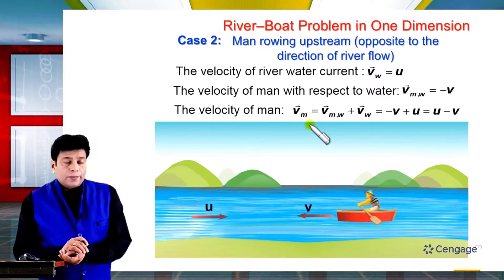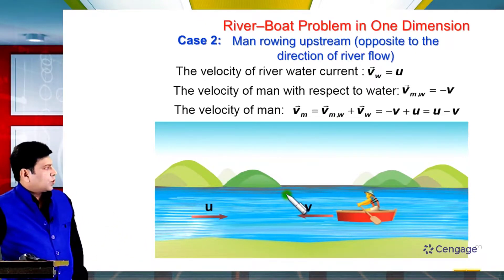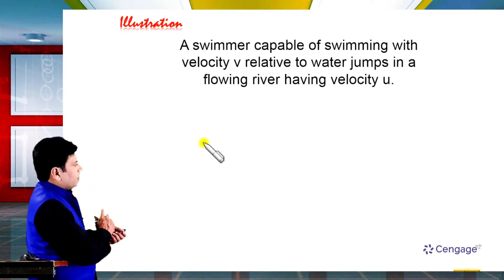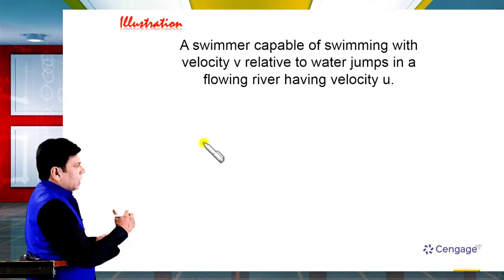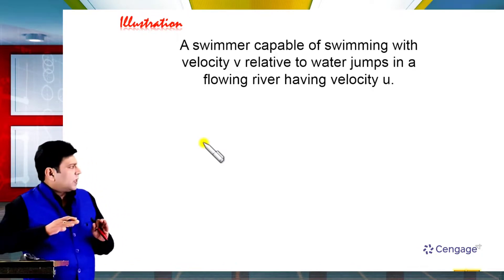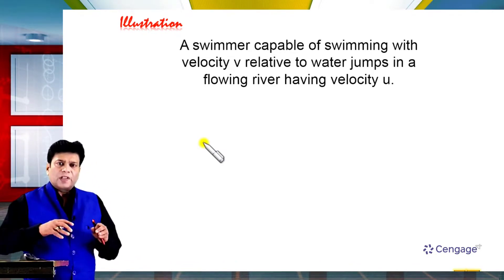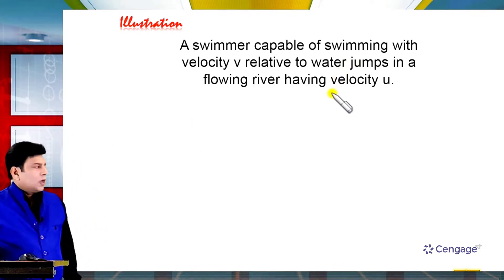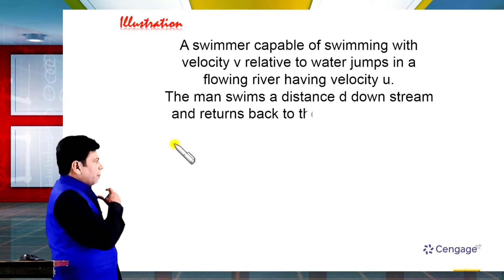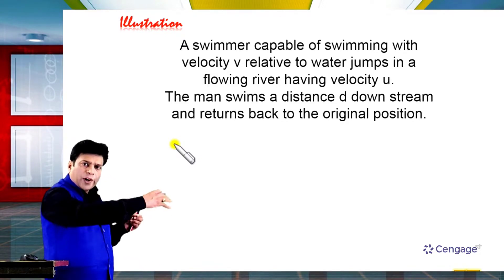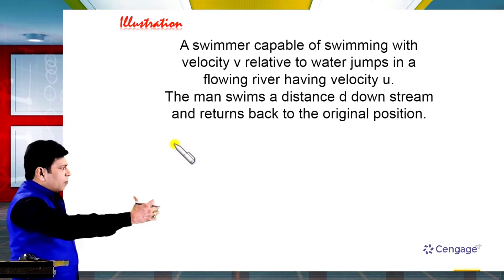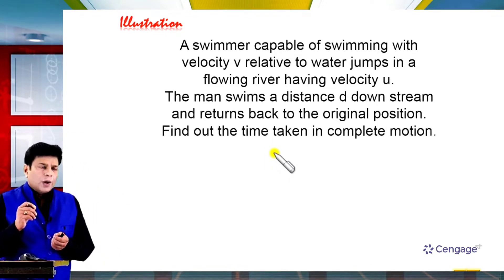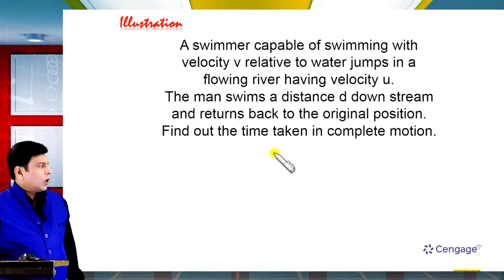Now let us take one illustration and apply this concept. In this illustration, a swimmer capable of swimming with velocity V relative to water jumps into a flowing river having velocity U. The swimmer swims a distance D in the downstream direction — along the river flow — then returns back to the original position. We need to find the total time taken for the complete journey.